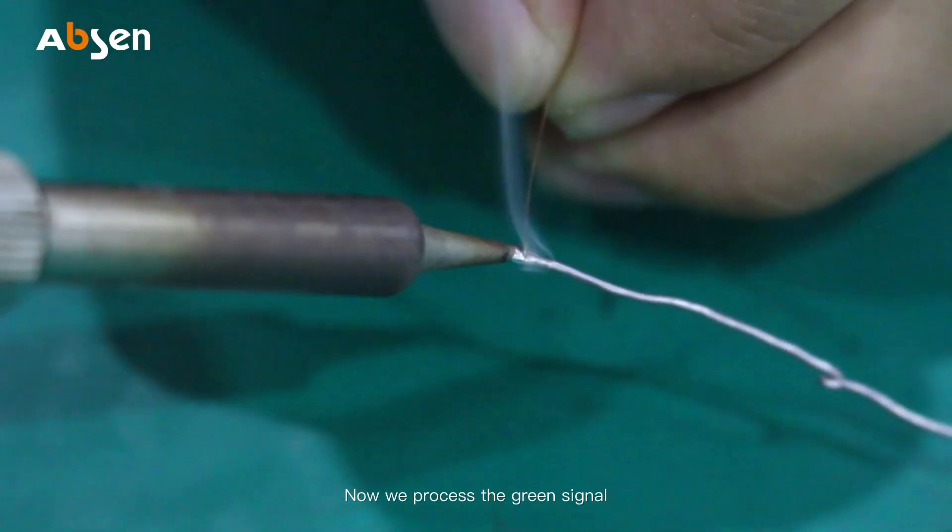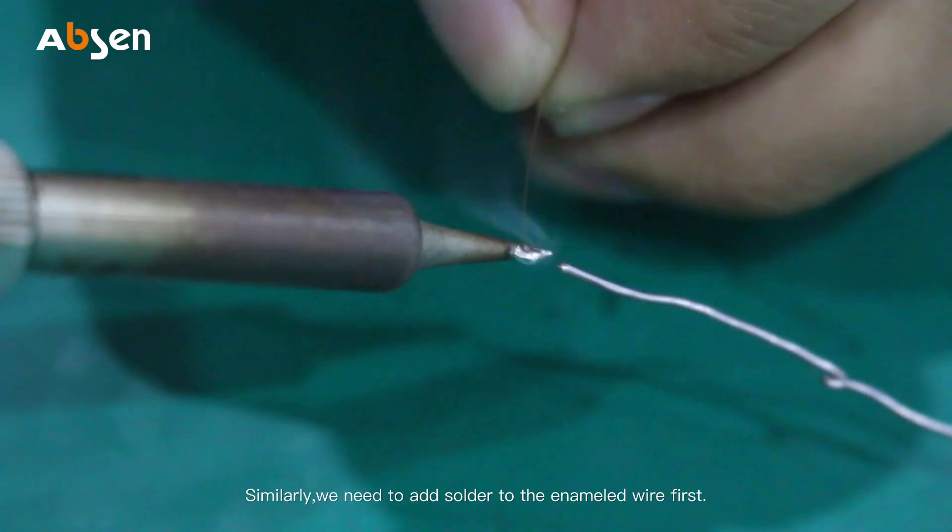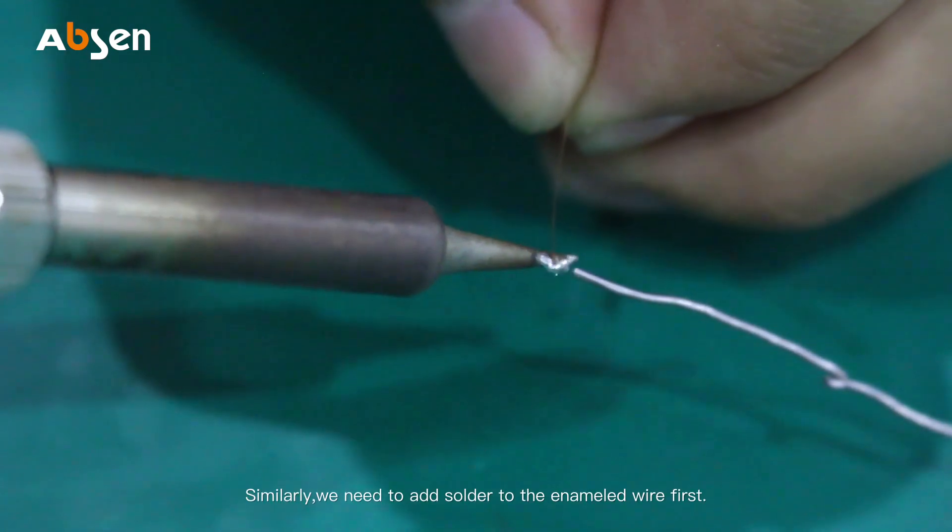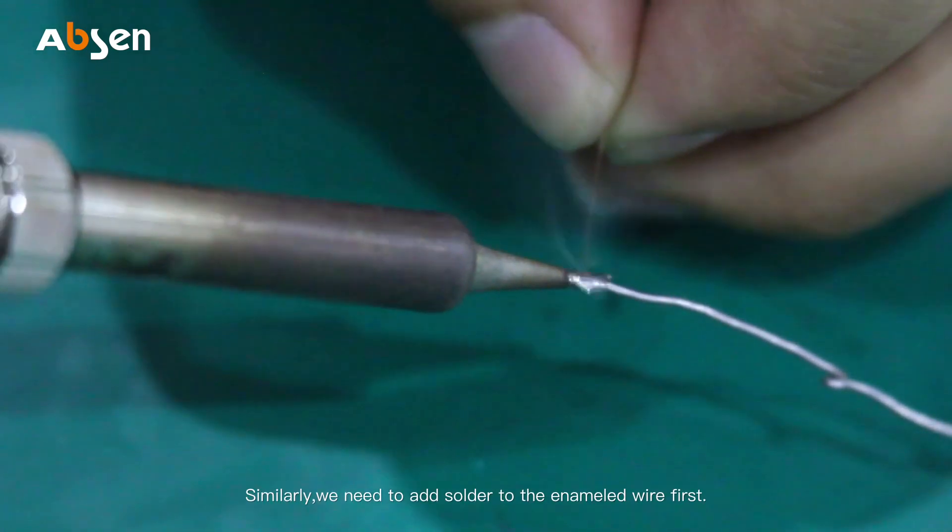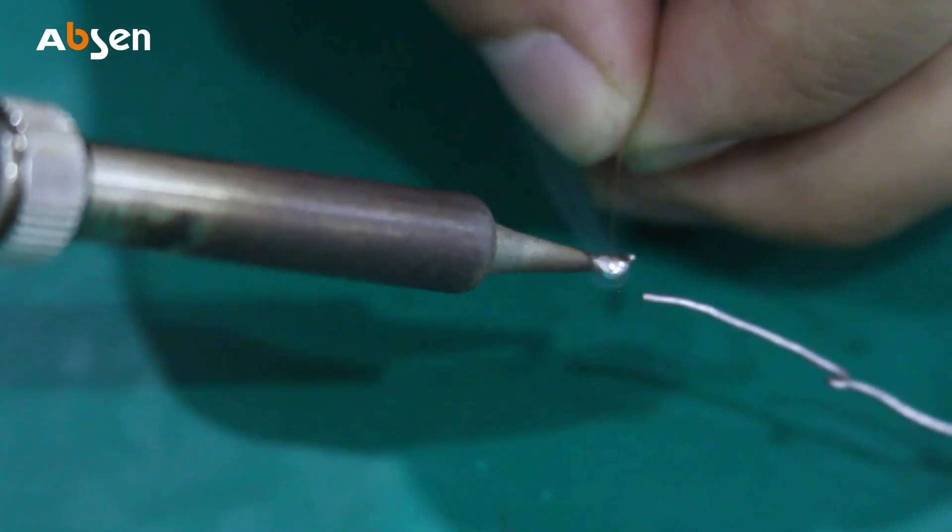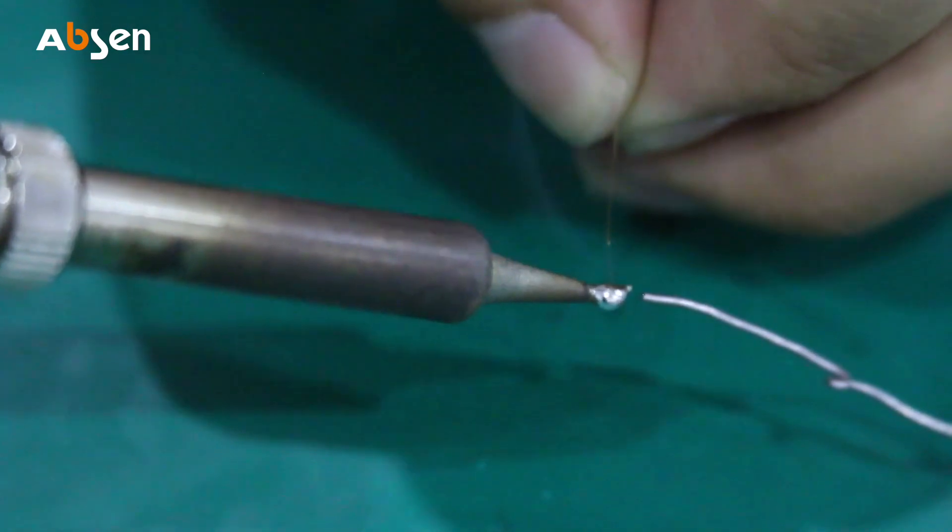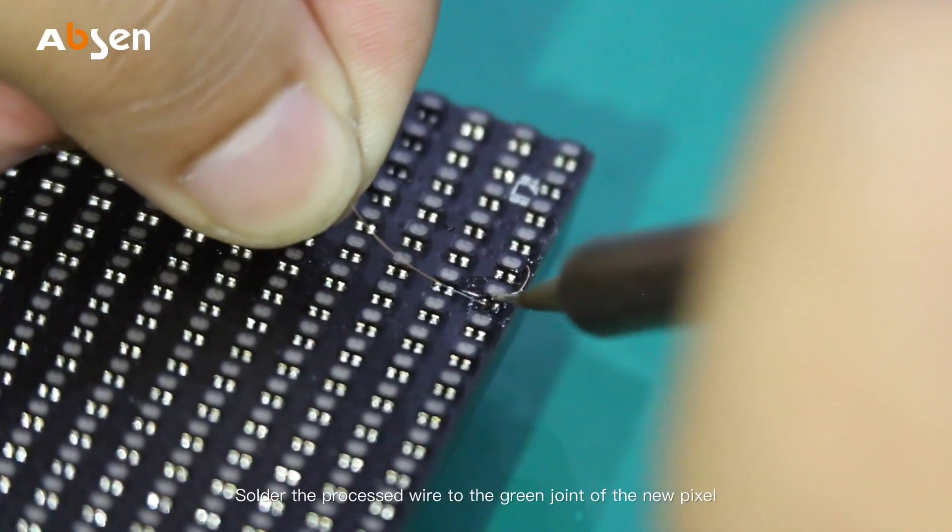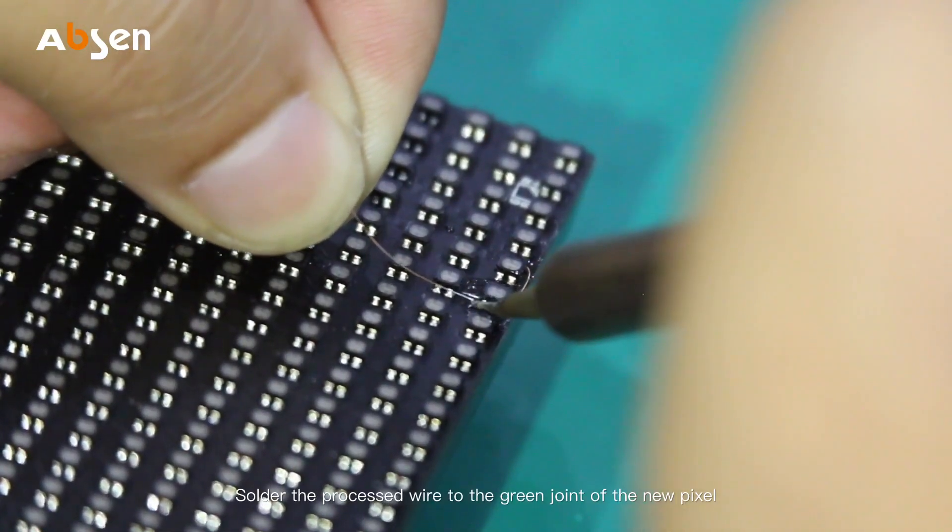Now we process the green signal. Similarly, we need to add the solder to the enameled wire first. Solder the processed wire to the green joint of the new pixel.